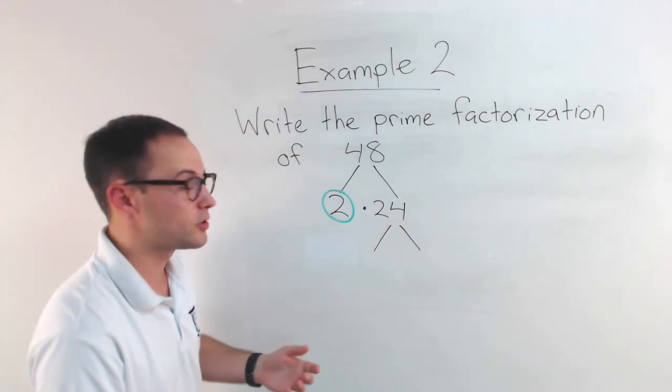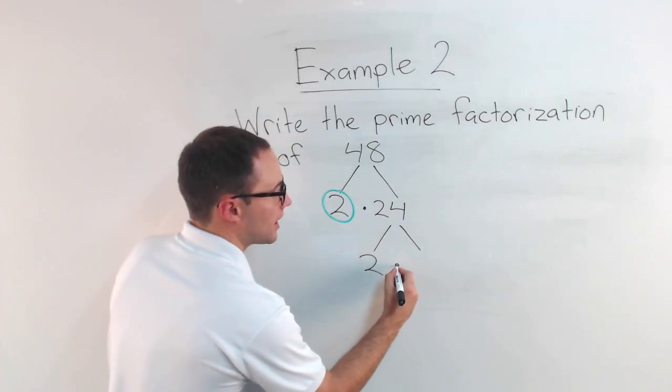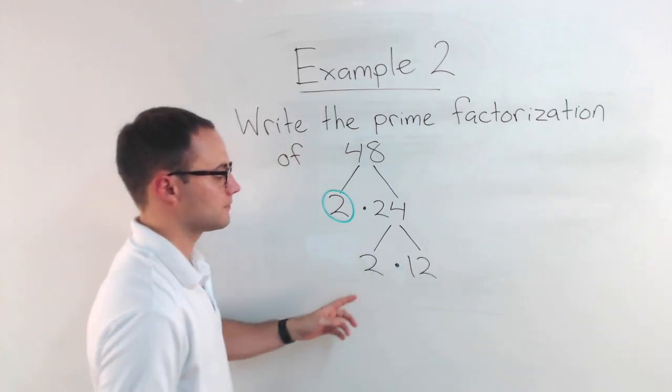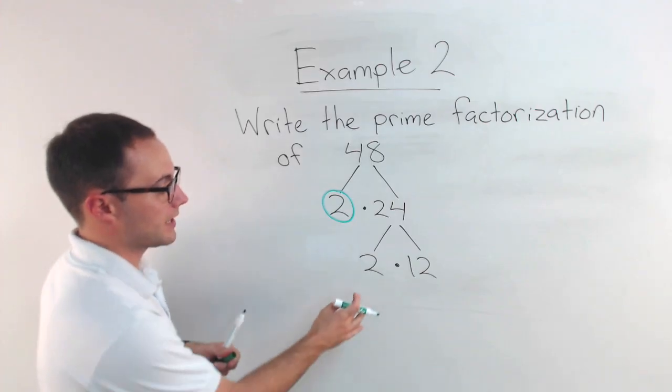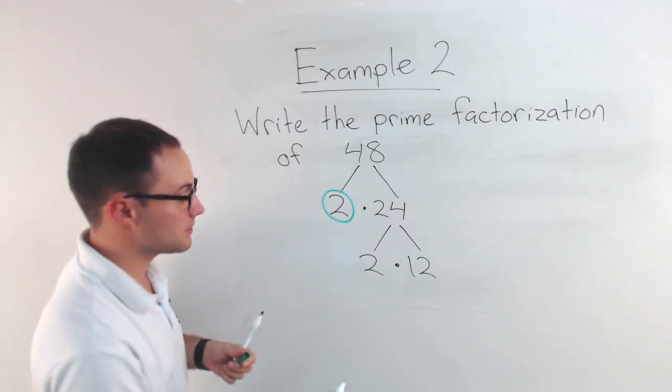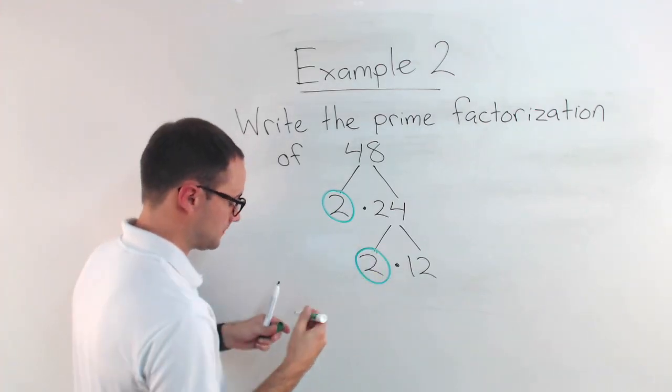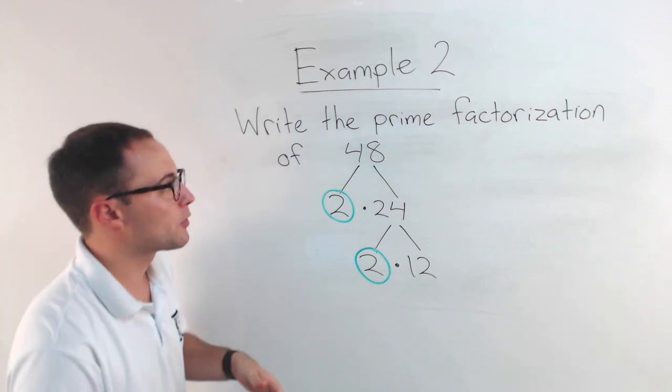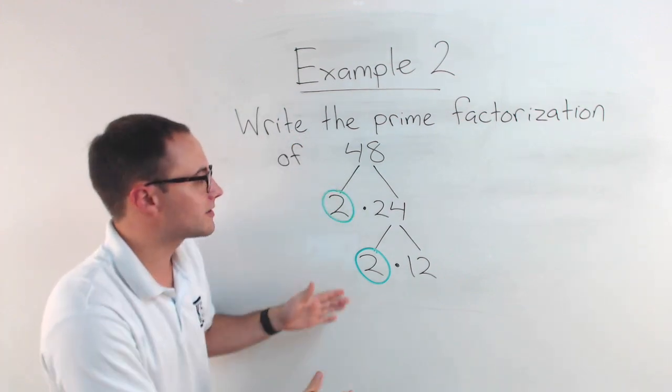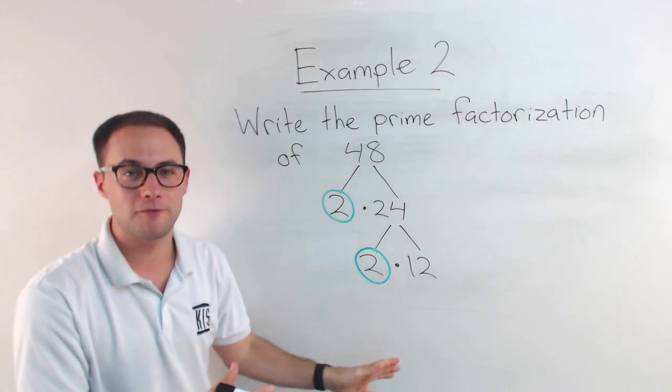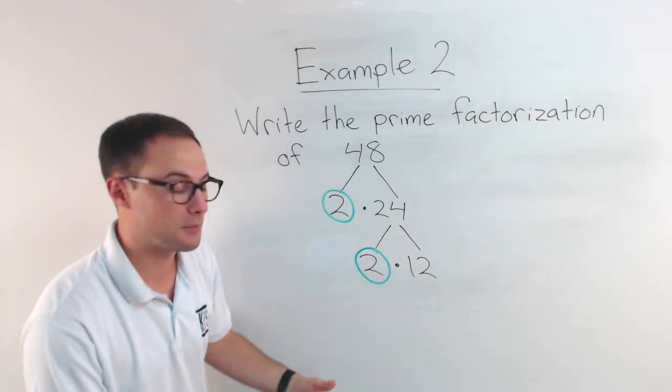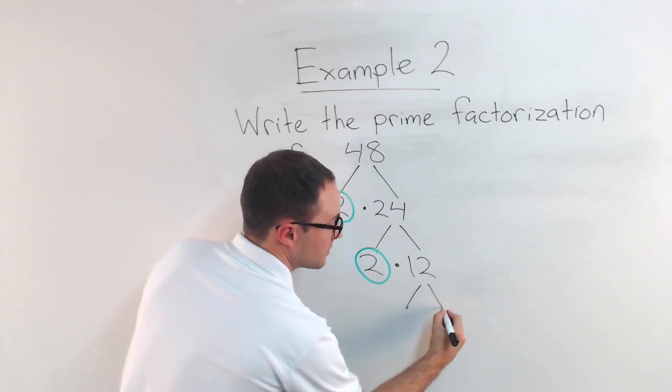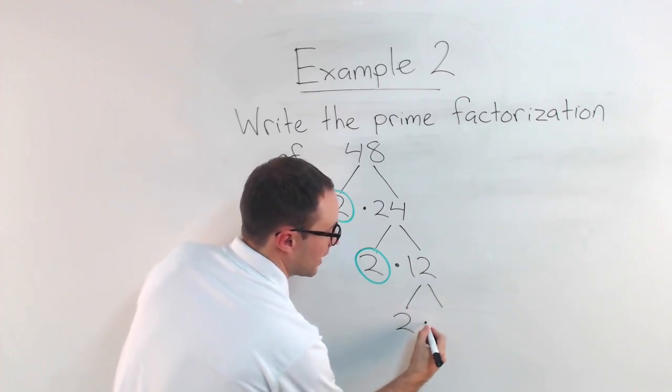And it's even, so I can do two again. Two times 12. Two and 12 are both factors of 24. And again, two is prime. So we're done with that. I'm going to circle it. Remember, we're just trying to find all the factors until we get to all prime factors. 12 is not prime. It's composite. So we're going to keep going. It's even. So I can do two again. Two times six.